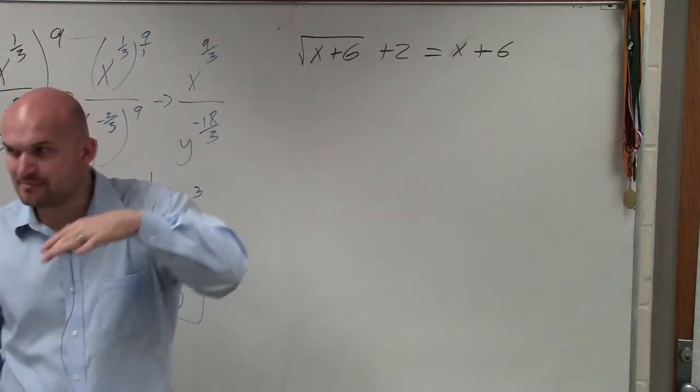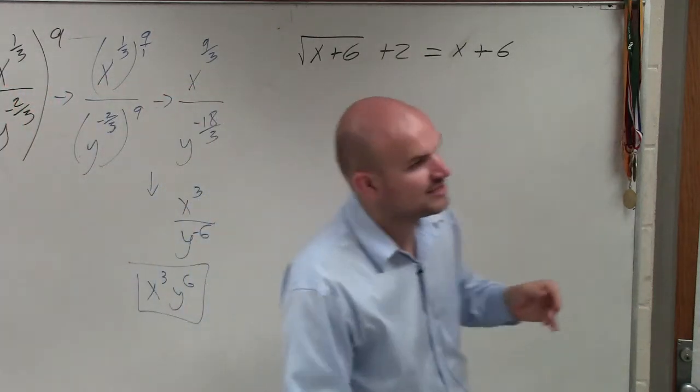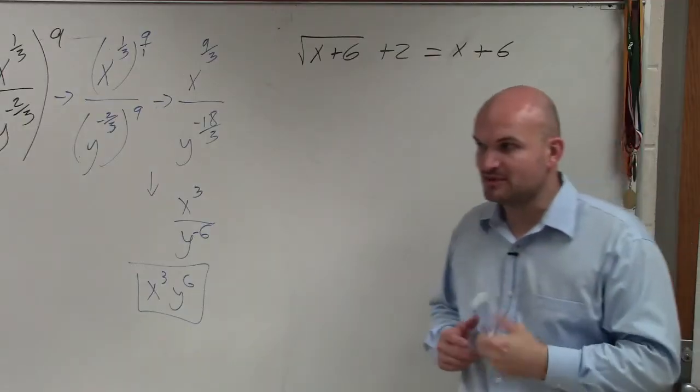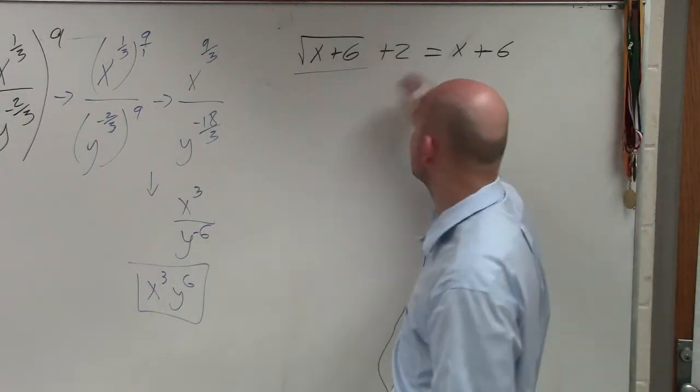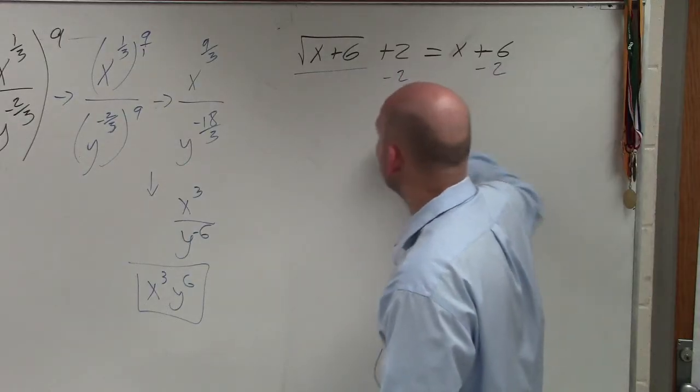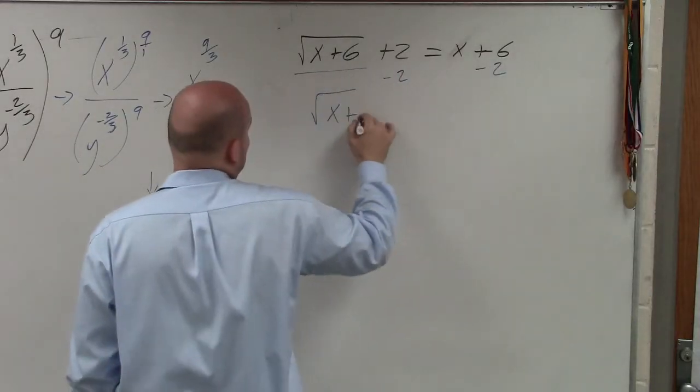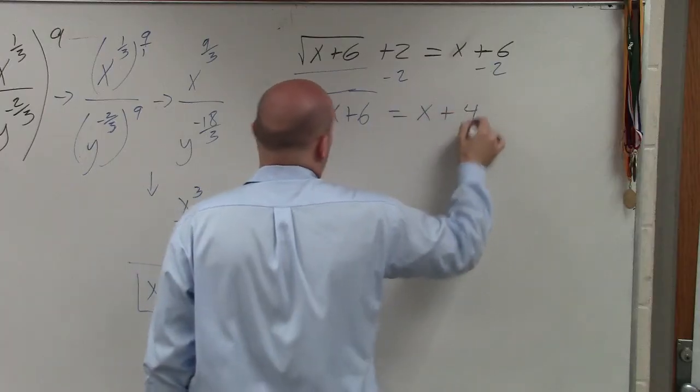So I'm going to work through this problem a little bit quickly because we're on short time. But if you have questions, please let me know. The first thing we need to do is isolate our square root. So I'm going to subtract the 2 on both sides. So I have the square root of x plus 6 equals x plus 4.